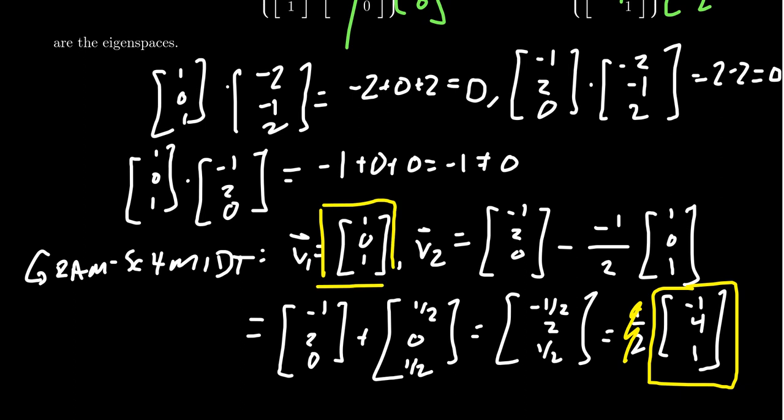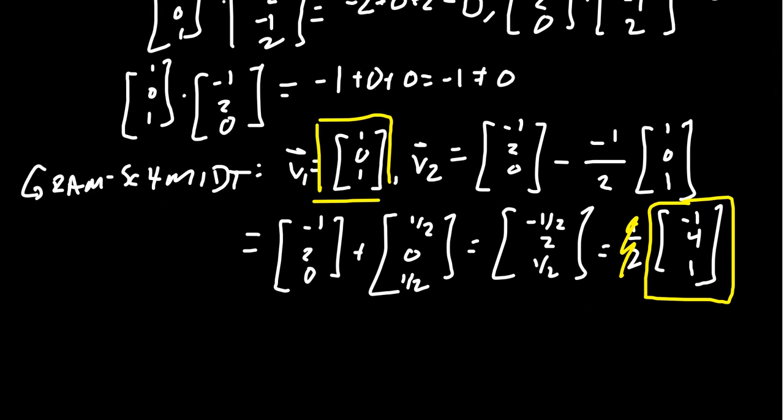We take 1, 0, 1 right here. And then the other vector we had, we don't need to change it from the negative 2 eigenspace. We take V3 to be that vector right there, the negative 2, negative 1, and 2.